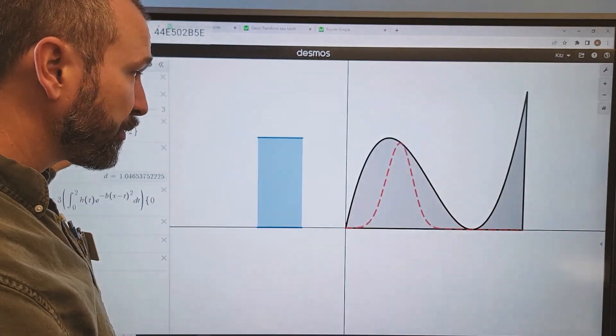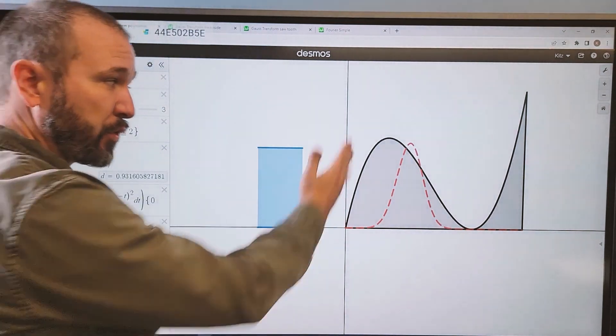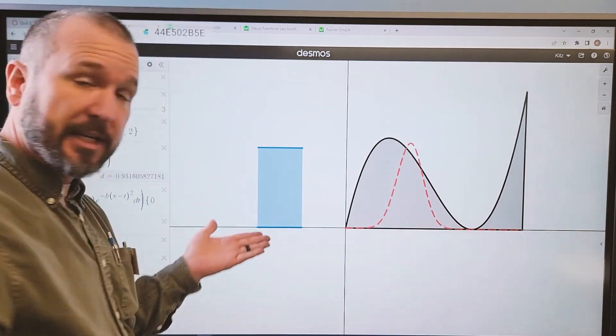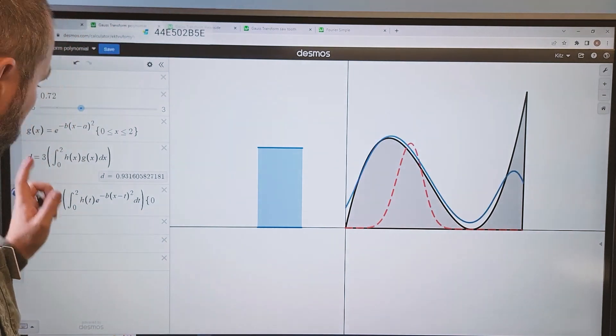As I slide this through, the blue bar goes up and down. So for each position of the density function, I get a different total mass. In fact, I've graphed them here.